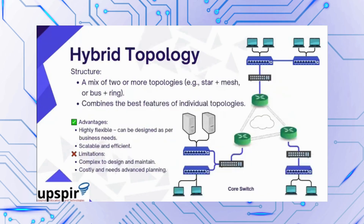Then we have hybrid topologies, mostly used when offices are in multiple locations. These are combinations of star and mesh or star and ring topologies. They are highly flexible, can be designed as per business needs, and are scalable and efficient. The only limitations are complexity and cost, but for offices in multiple locations, this is what you need.